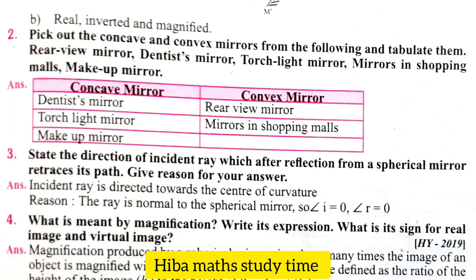Second question: pick out the concave and convex mirrors from the following — rear view mirror, dentist mirror, torch light mirror, mirrors in shopping malls, make-up mirrors. Concave mirrors: dentist mirror, torch light mirror, make-up mirror. Convex mirrors: rear view mirror and mirrors in shopping malls.